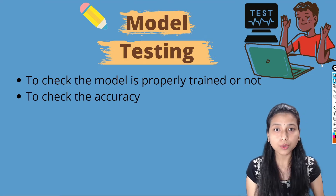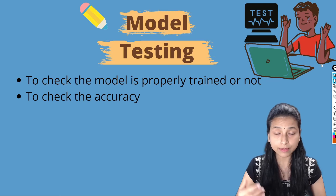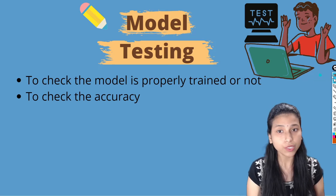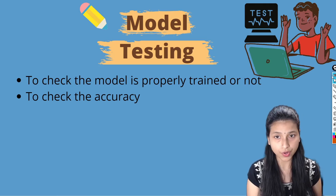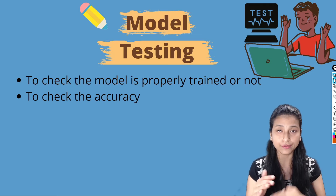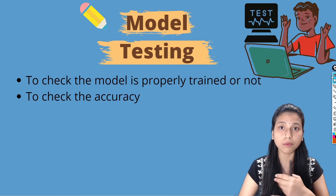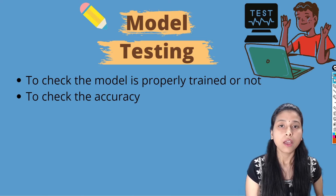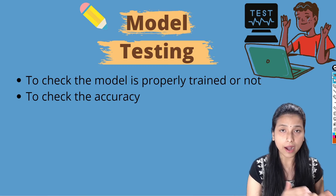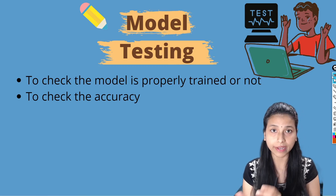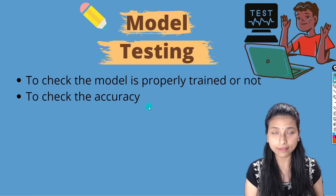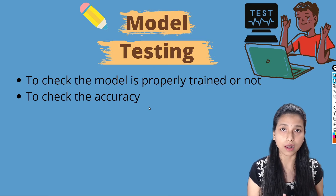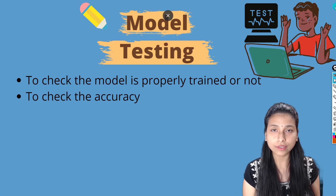Inside model testing, we test our trained model to check if it is properly trained or not — whether it is giving the expected accuracy. If it is not properly trained, we go back to previous steps and perform some kind of hyperparameter tuning, then test the model again. We will not move the model to the next step until we get good accuracy matching our expectation. The main aim of model testing is to check the accuracy and how well our model is performing.